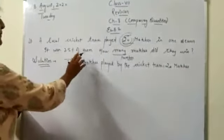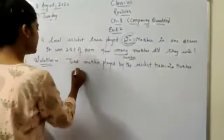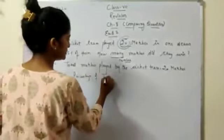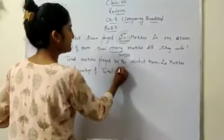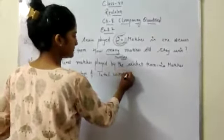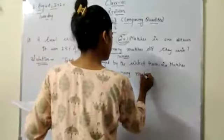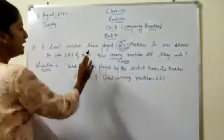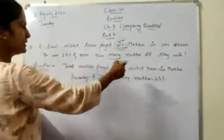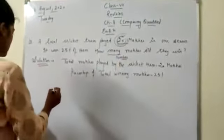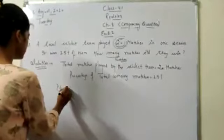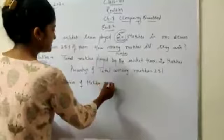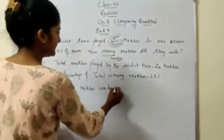It won 25% of them. So, percentage of total winning matches is 25%. What do we have to find? How many matches did they win? It means we have to find the number. So, number of matches won by them.